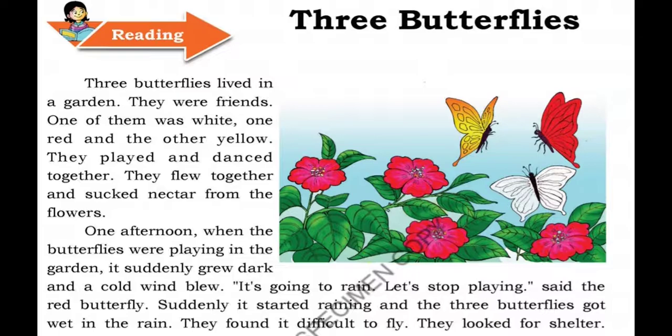One afternoon, when the butterflies were playing in the garden, it suddenly grew dark and a cold wind blew. It is going to rain. Let's stop playing, said the red butterfly. Suddenly it started raining and the three butterflies got wet in the rain. Everybody gets wet in the rain. The butterflies are very delicate. They found it difficult to fly. The rain is heavy, so they cannot fly. They look for shelter.